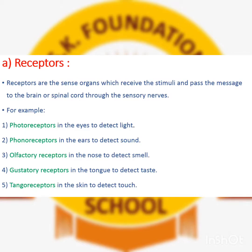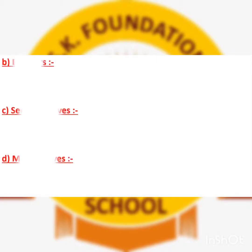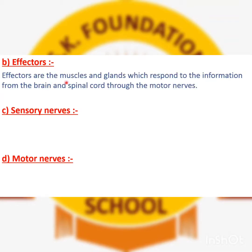Now we talk about effectors, sensory nerves, and motor nerves. Effectors are the muscles and glands which respond to information from the brain and spinal cord through motor nerves. Just as receptors are sense organs that receive signals, effectors are the organs — muscles and glands — which give the final response to any condition, but with the help of motor nerves.